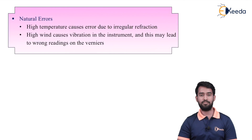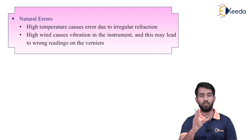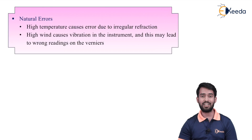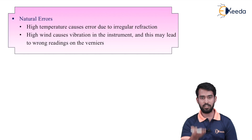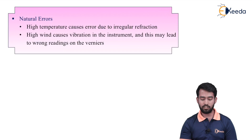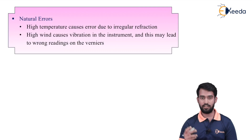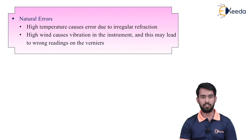The last category is natural errors. High temperature causes error due to irregular refraction, making it difficult to obtain accurate readings. High wind causes vibrations in the instrument, which may lead to wrong readings on the verniers, as these are minute readings that are hard to calculate under such conditions. In summary, there are three types of error: instrumental, personal, and natural error. Thank you.